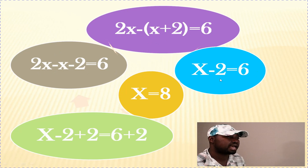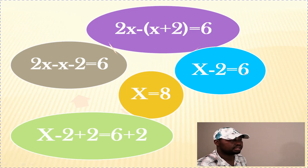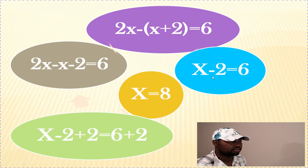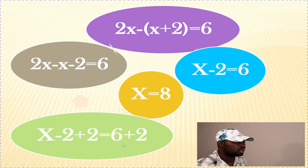Remember from the previous problem, we collect like terms by eliminating the numbers and shifting them to the right-hand side, using the opposite sign. We have negative 2, so we add positive 2 to both sides. Negative 2 plus 2 equals 0, and 6 plus 2 equals 8. So x equals 8.